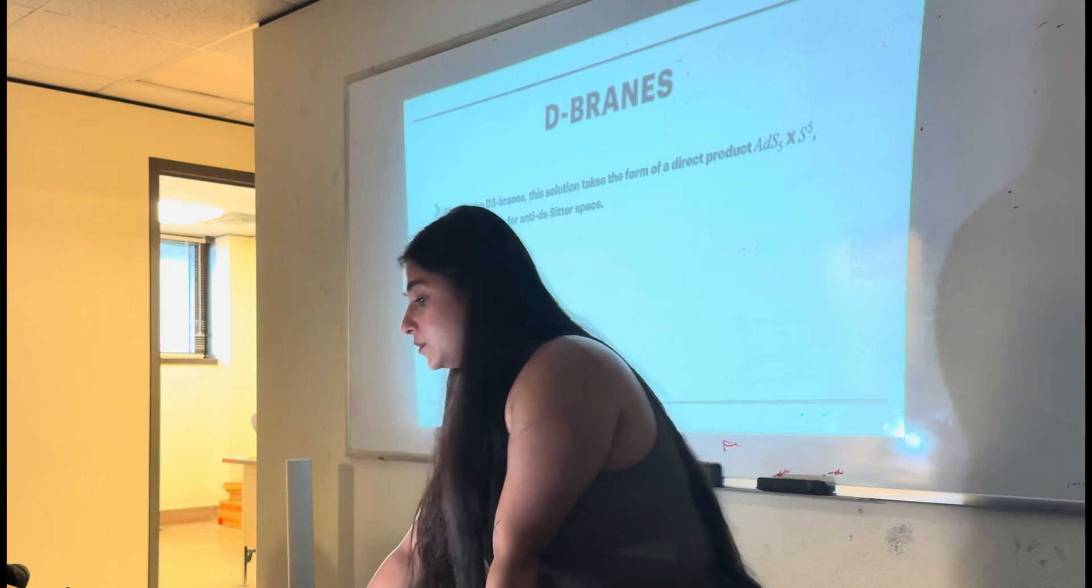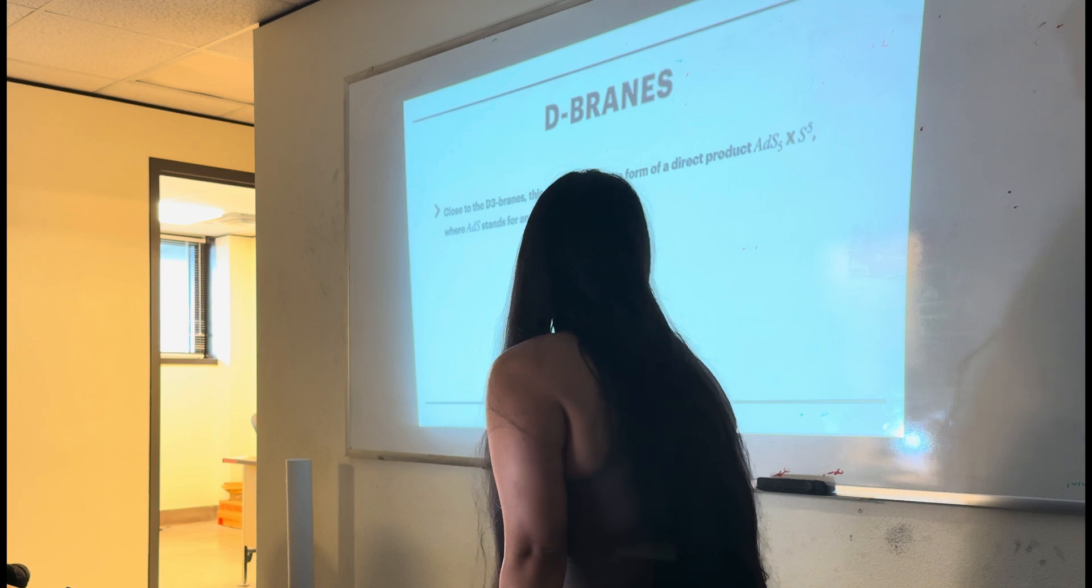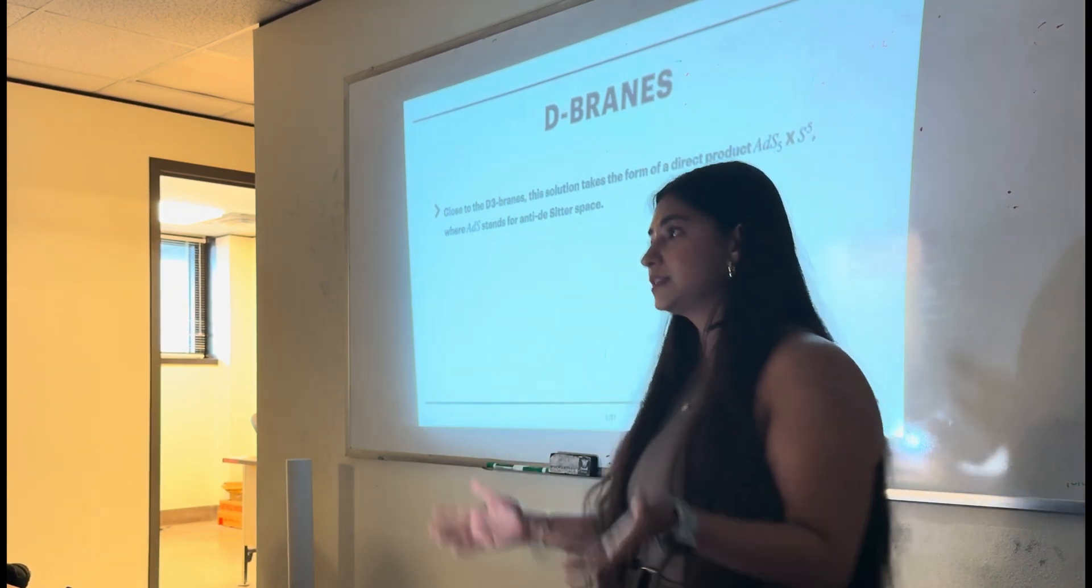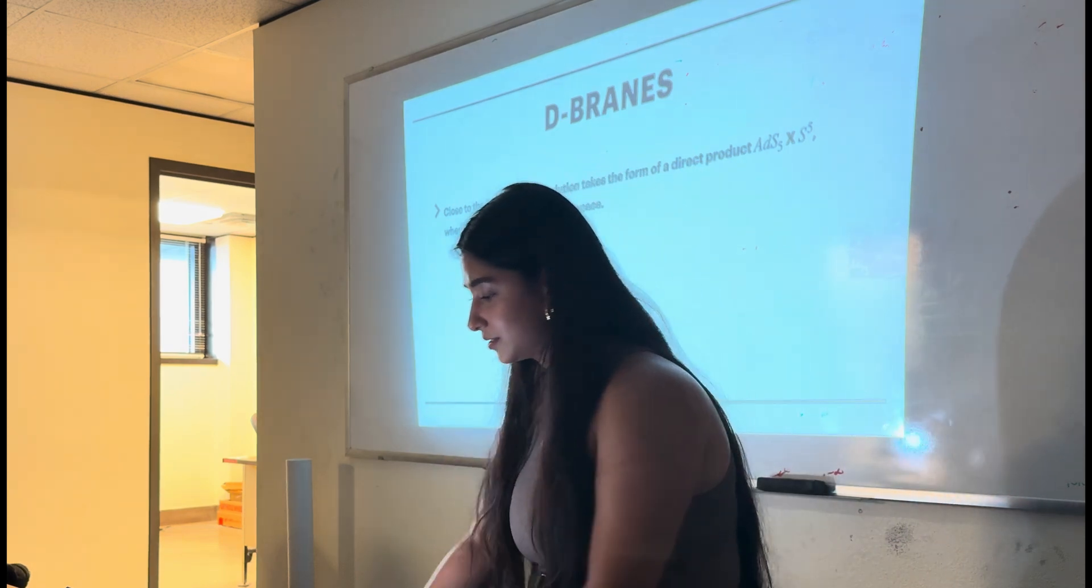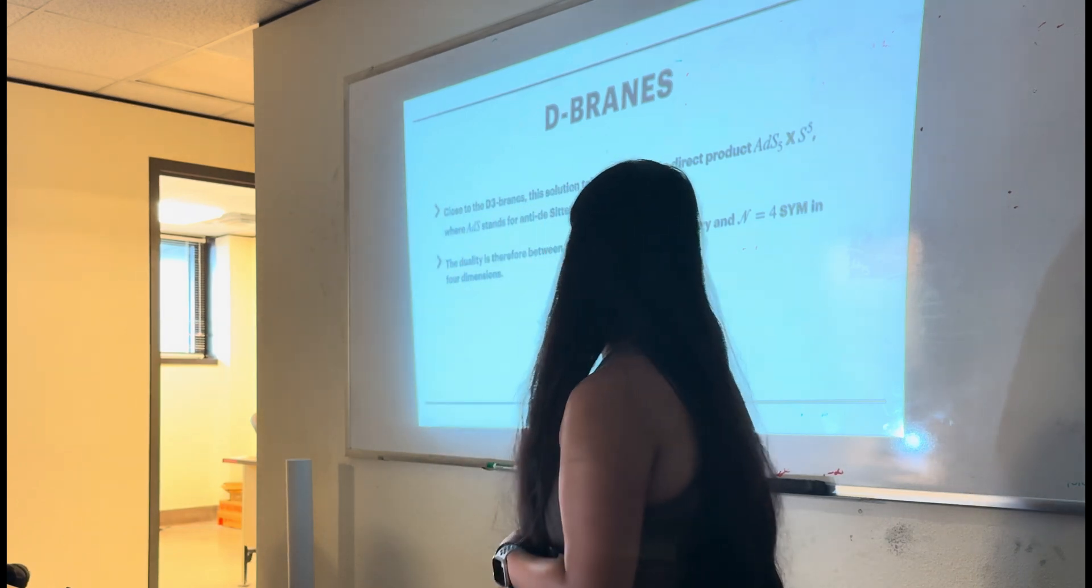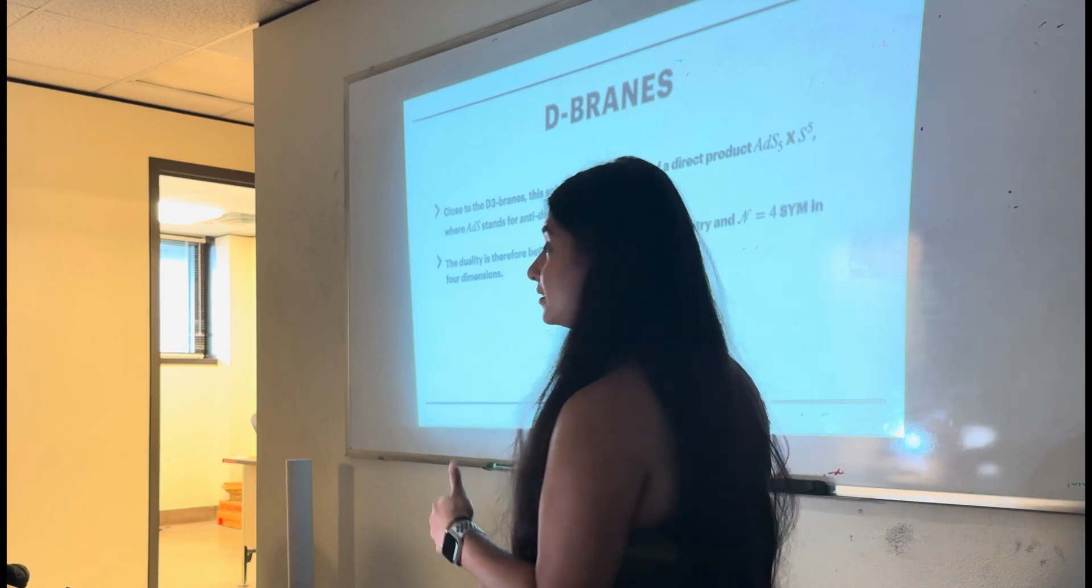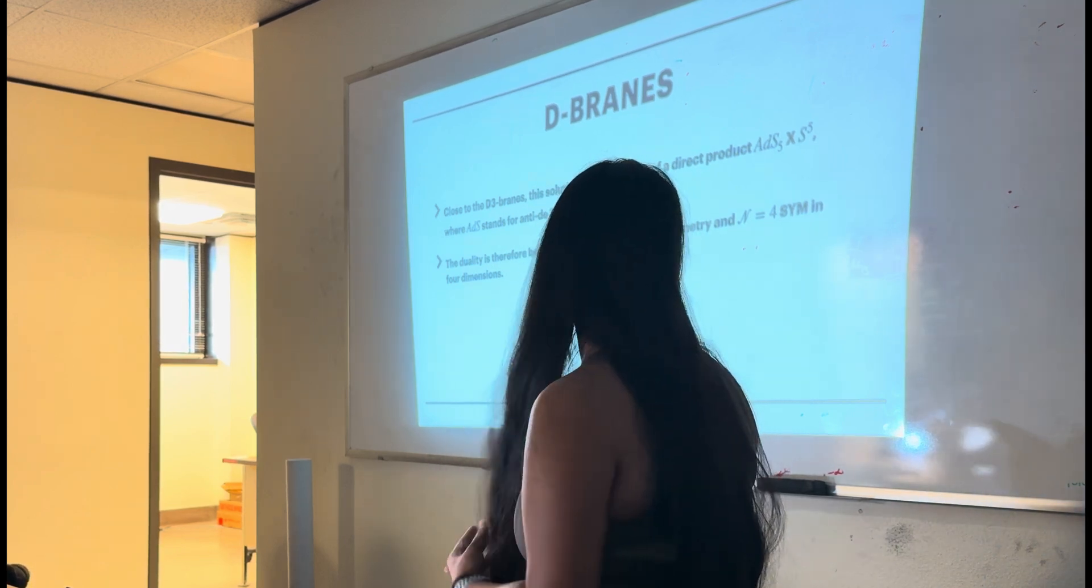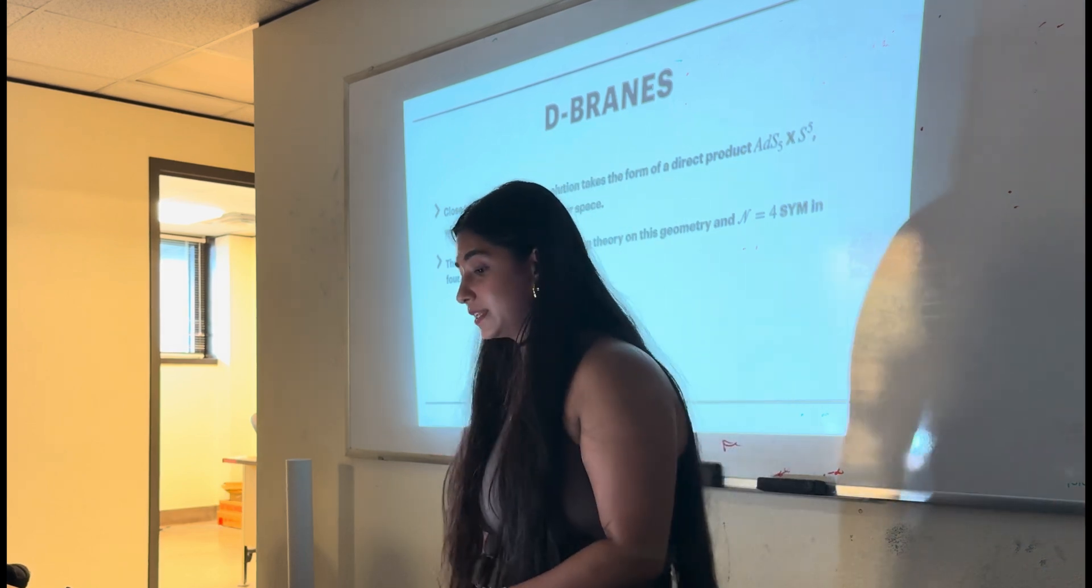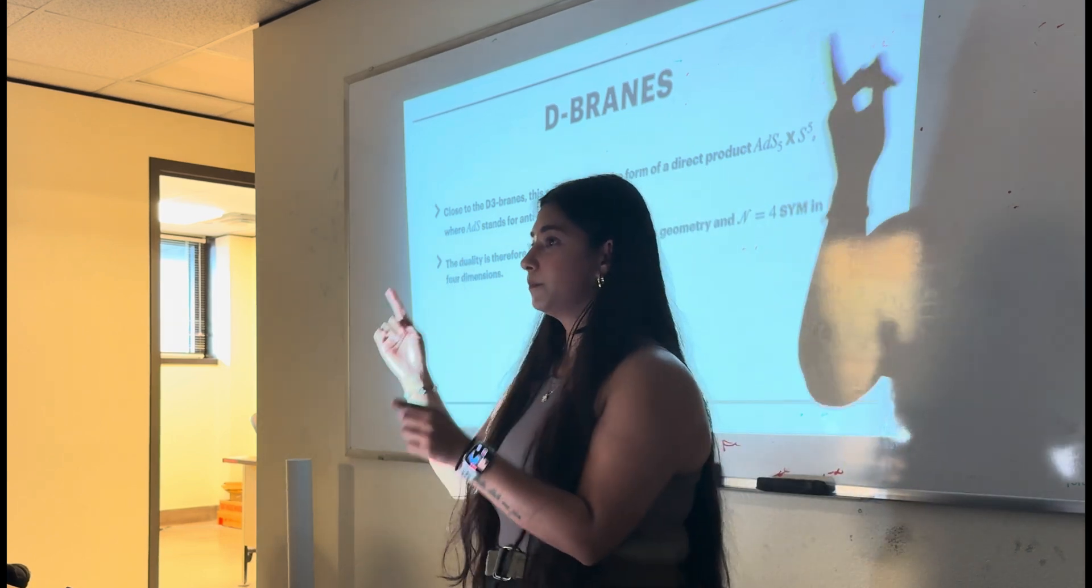D-3-branes have definite mass per unit and a charge under five-form flux. What this means is that they deformed the spacetime into a solution of 10-dimensional Einstein's equations coupled to the five-form. Essentially, we have Einstein's field equations in 10 dimensions, and D-3-branes are a solution to those equations. Now, close to D-3-branes, this solution takes the form of a direct product of AdS5 cross S5. AdS stands for anti-de Sitter space, which is space with a negative cosmological constant.